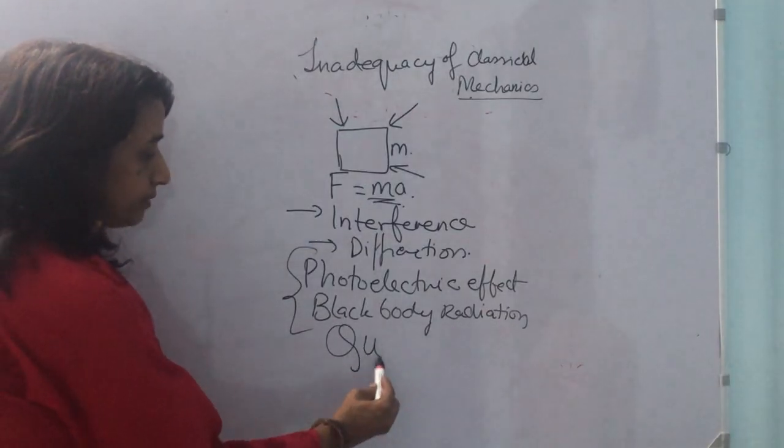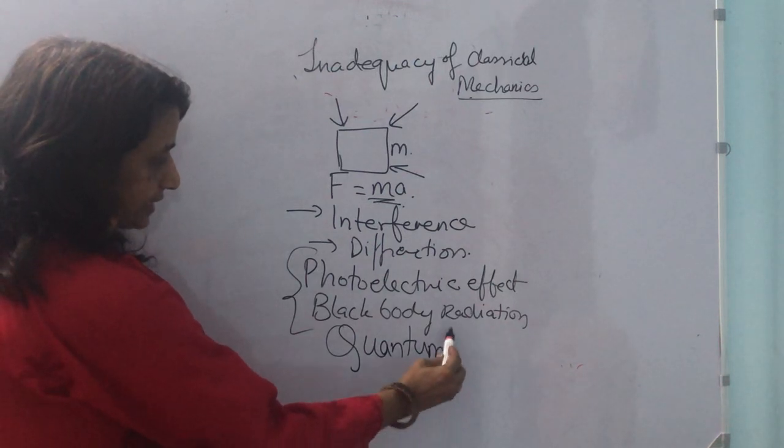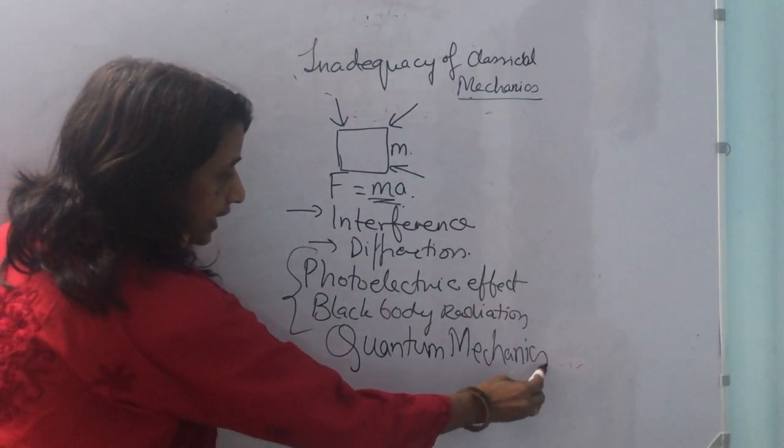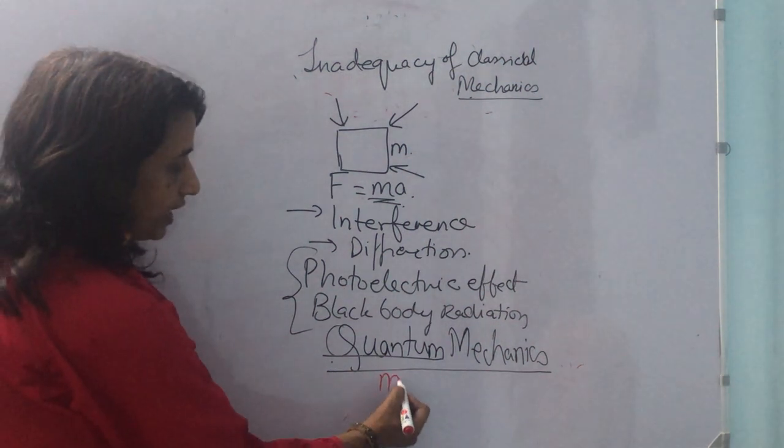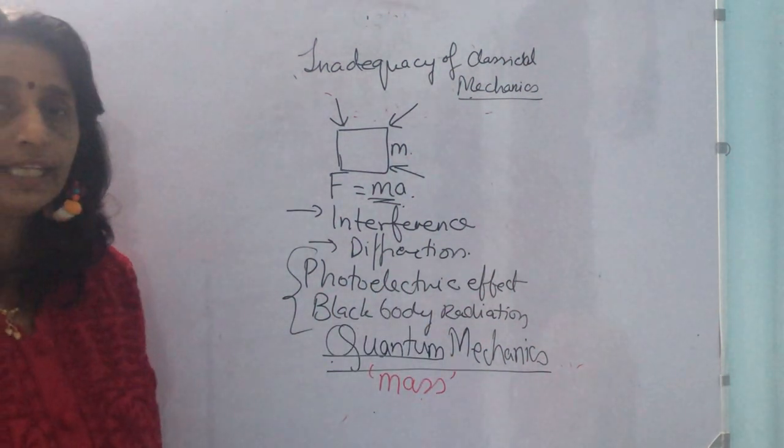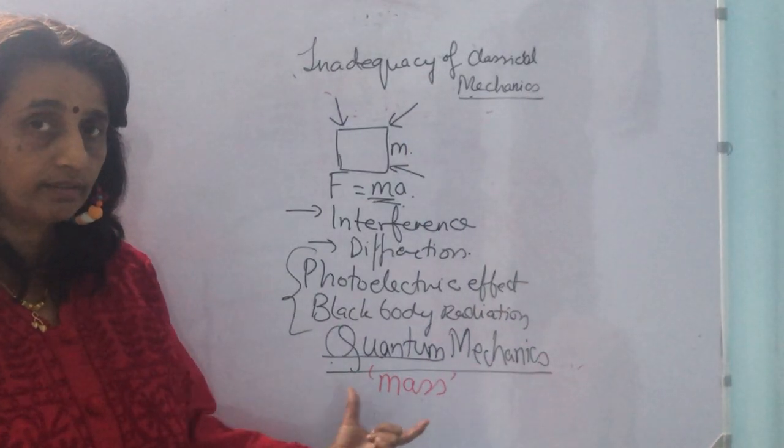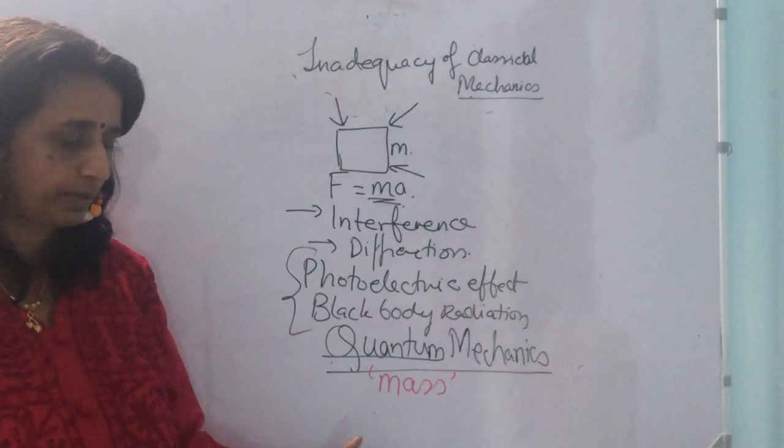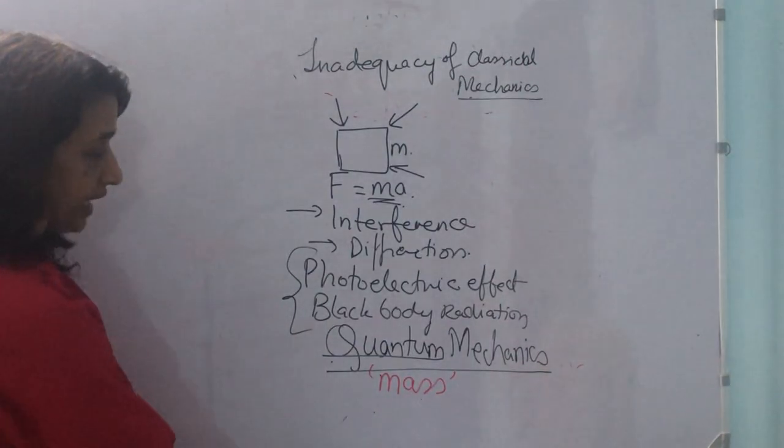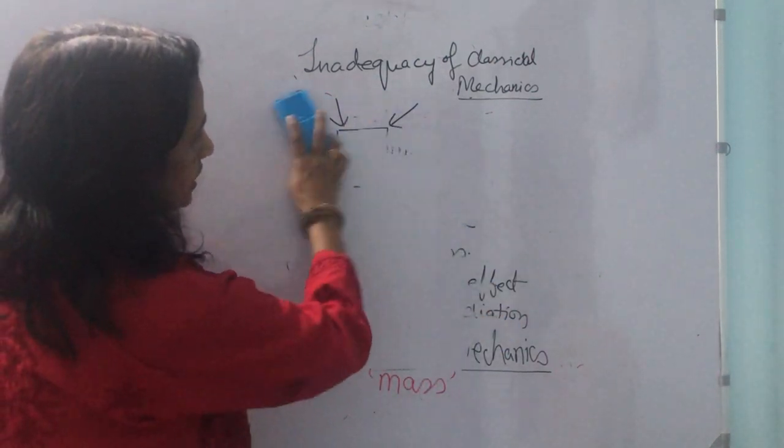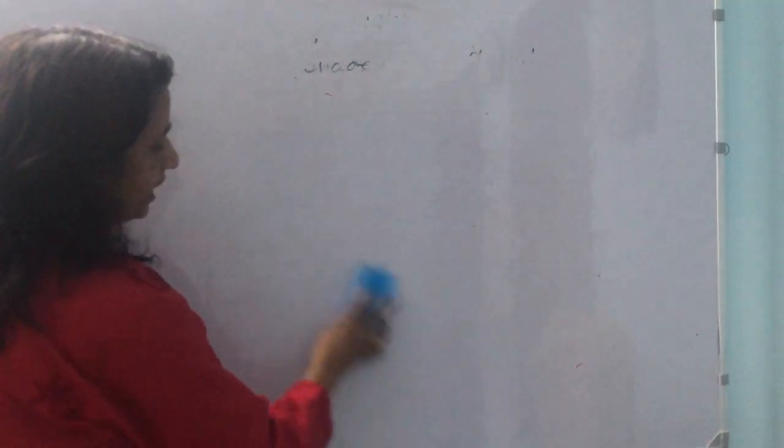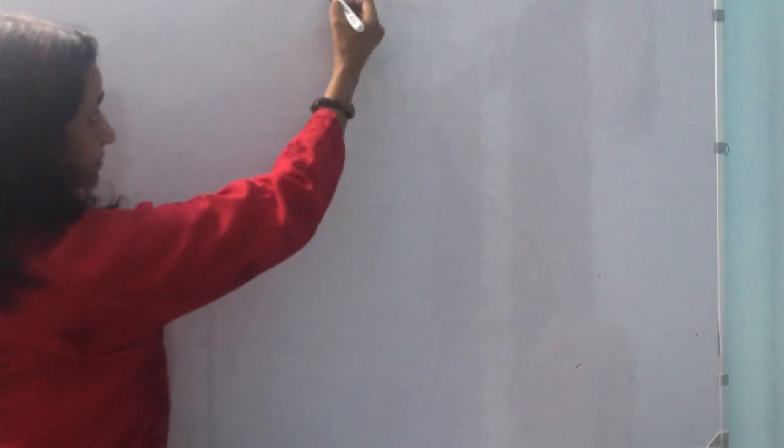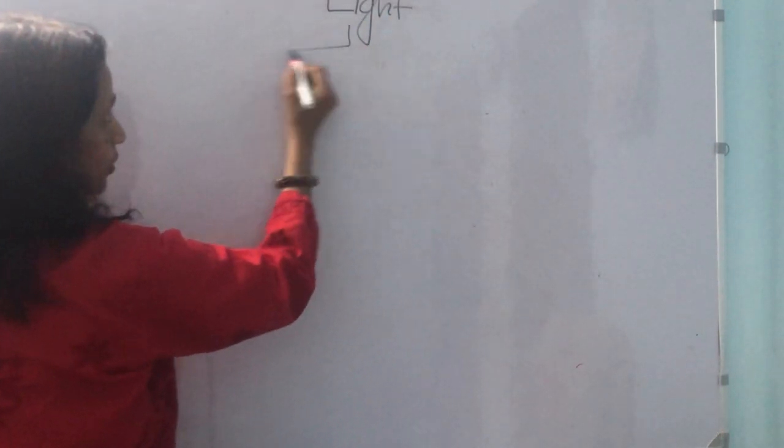Now quantum mechanics deals with particles of very small mass, usually in large number. How do we explain the concept of quantum mechanics or the particle nature where we need to explain these phenomena? We are well aware of the fact that light has a dual character.